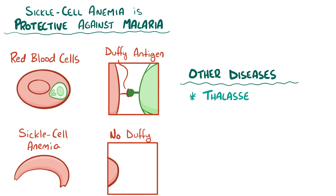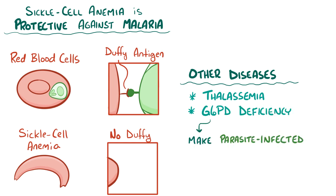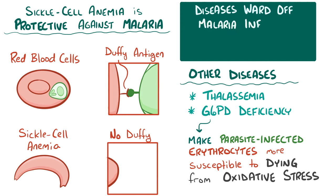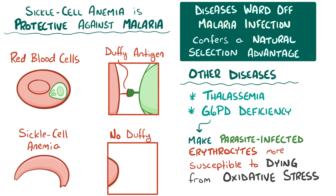Other diseases, like thalassemia and G6PD deficiency, make the parasite-infected erythrocyte more susceptible to dying from oxidative stress. So despite the obvious downside to having any of these diseases, they do offer an upside when it comes to warding off a malaria infection. In fact, because malaria has historically circulated in Africa, the genes underlying these diseases are thought to have conferred a natural selection advantage and therefore become more common in the genetic pool.